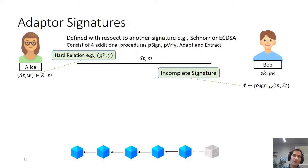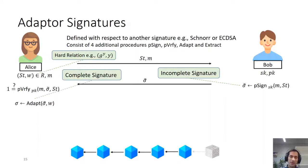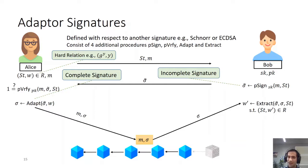Bob sends this pre-signature back to Alice, and Alice can check if it is valid by running p-verify. If so, she can adapt the pre-signature into a valid full signature given her witness—a complete signature that looks identical to one generated by Bob on message m using sk. She can then post the signature to the blockchain. Upon the signature being accepted by the blockchain, Bob can read it and extract the witness given the pre-signature, the full signature, and the statement, such that the statement and extracted witness are in relation.